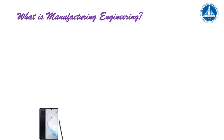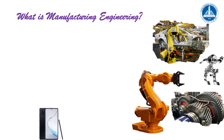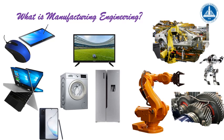The manufacturing engineer is going to manufacture everything. Engineering products which are usually made from metals, such as cars or any type of vehicles, the gear, the components — this is the gearbox of a car. The robots which manufacture various products. We can also manufacture home appliances like refrigerators, TV screens, air conditioners, or all home appliances.